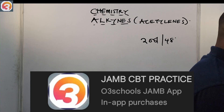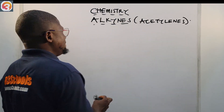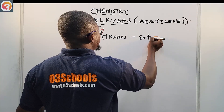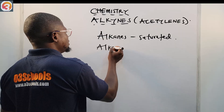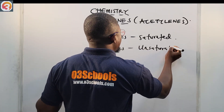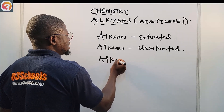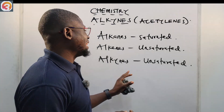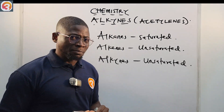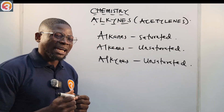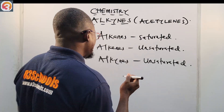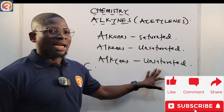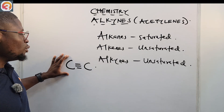Now, alkynes — we also call them acetylene. Remember: alkanes are saturated, alkenes are unsaturated, and alkynes are also unsaturated. The first thing to note is that alkynes are unsaturated hydrocarbons characterized by the presence of carbon-to-carbon triple bonds.